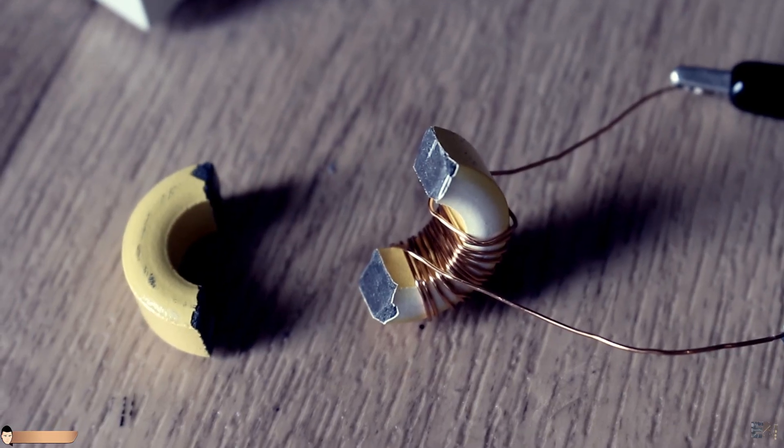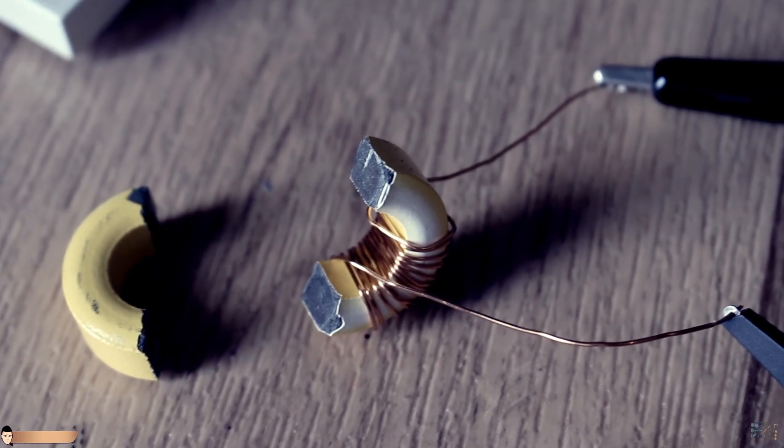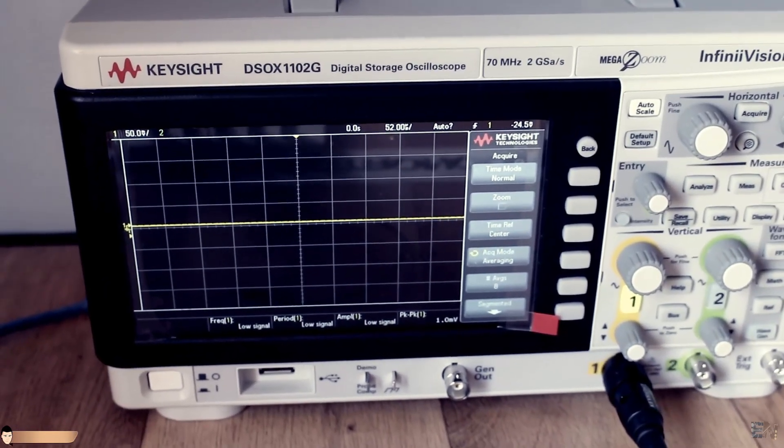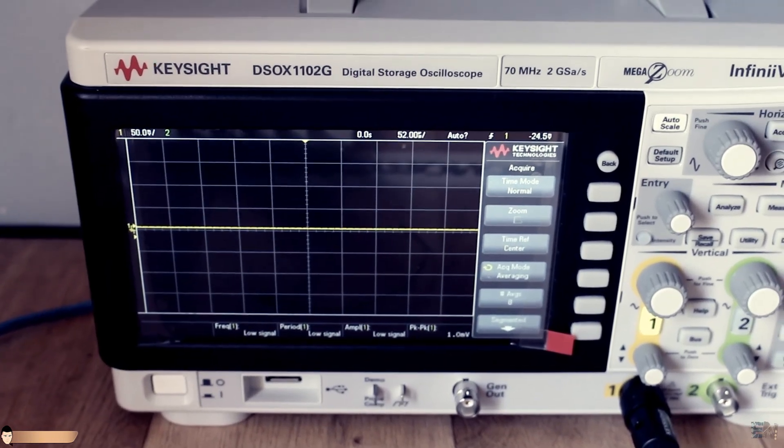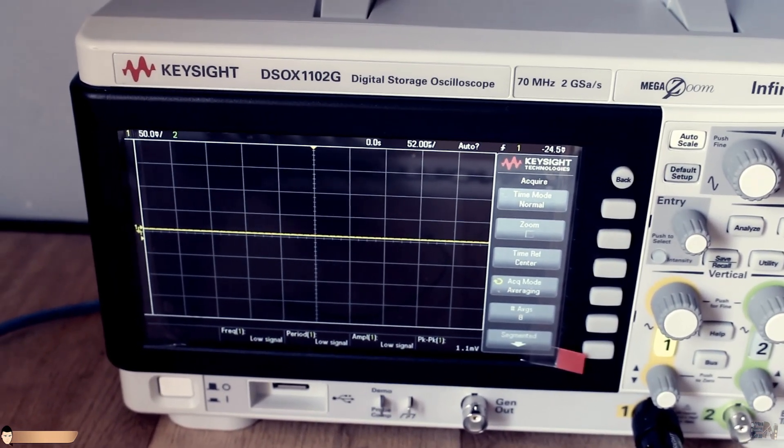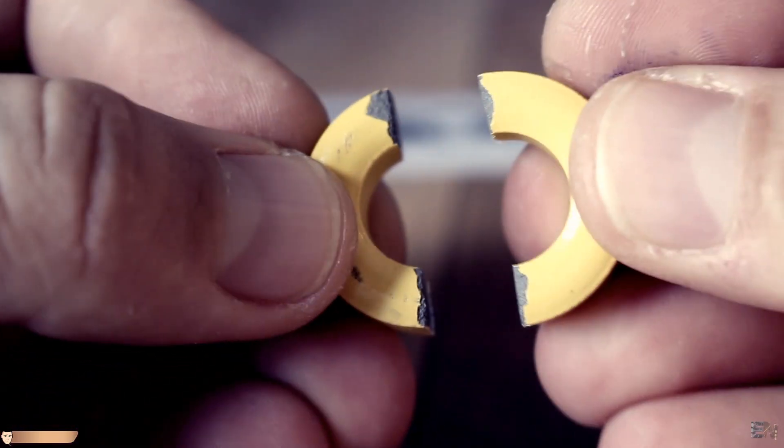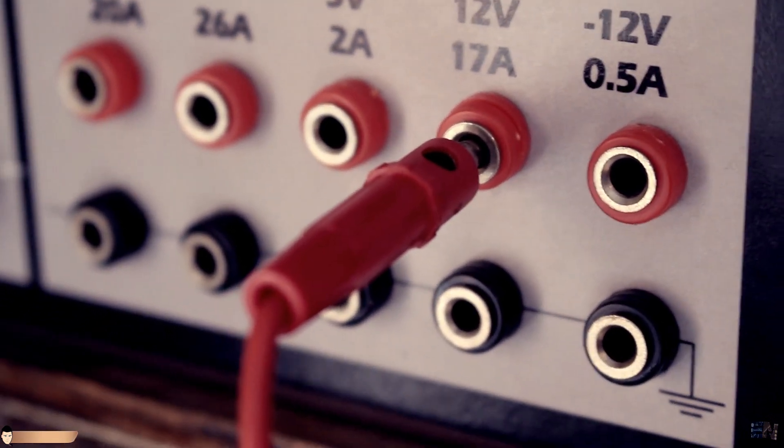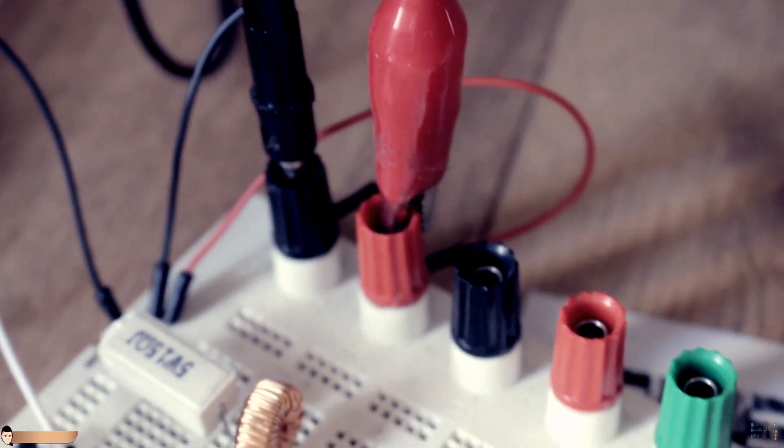But if I apply a DC current to this circuit, I will have nothing on my oscilloscope. That's because current is induced into the transformer only on changes of the magnetic flux. So a constant magnetic field won't induce current into the winding so the output will be zero.